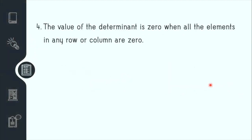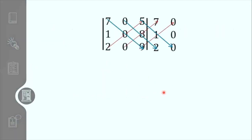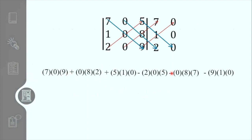Theorem number 4 states that if all of the elements in any row or column are 0, the value of the determinant is 0. For example, all elements in the second column are 0. Therefore, if we solve it, the determinant will be 0. It doesn't matter if it's the first row or the third row — as long as all elements in that row or column are 0. If we solve it manually, as we can see each term has a 0 factor, and any number multiplied by 0 equals 0. Simplifying this, the determinant equals 0.